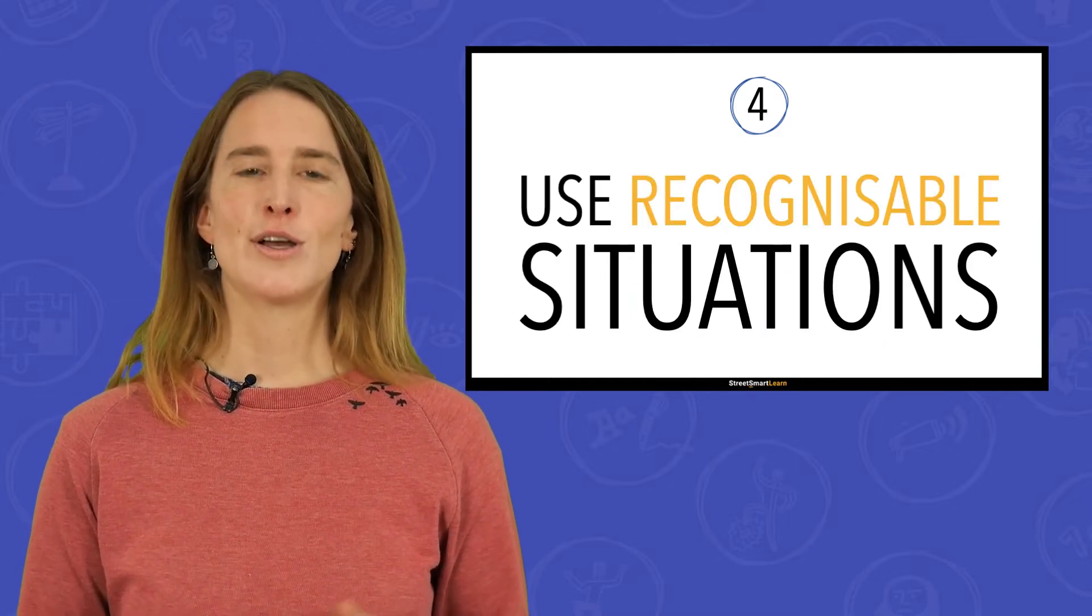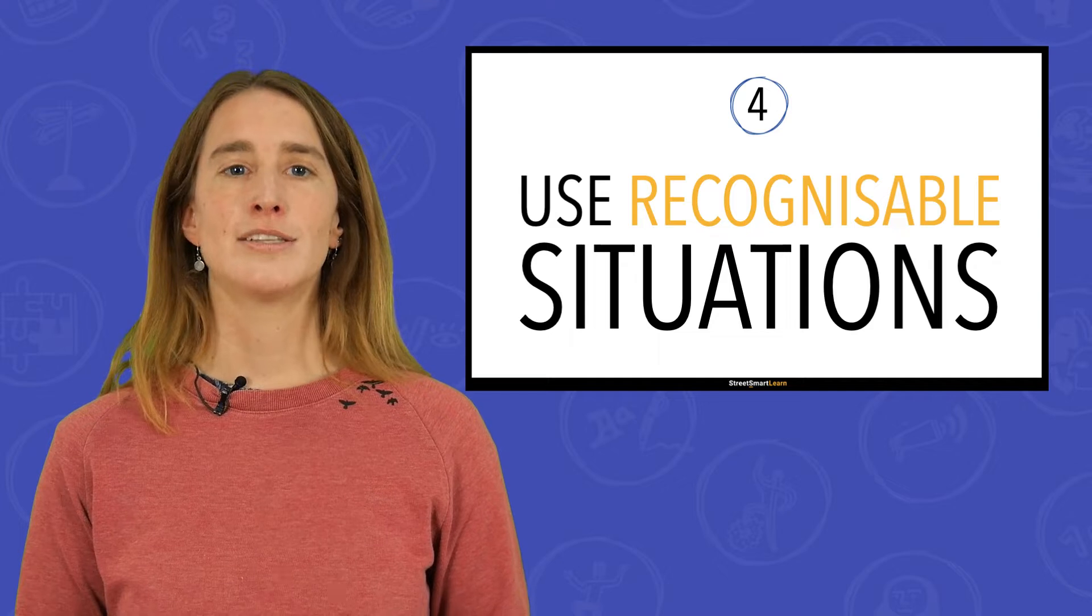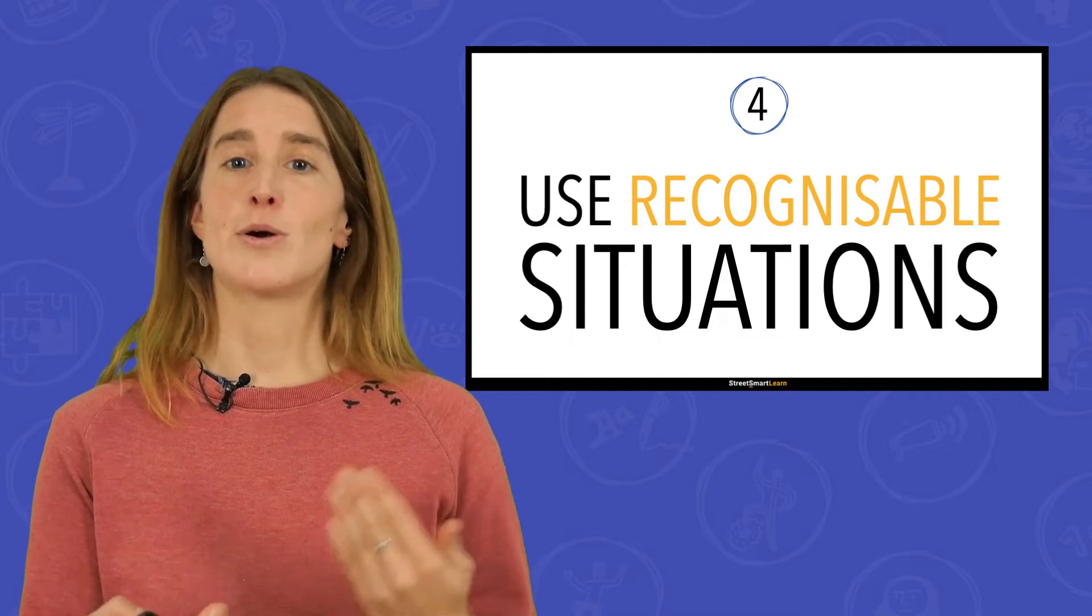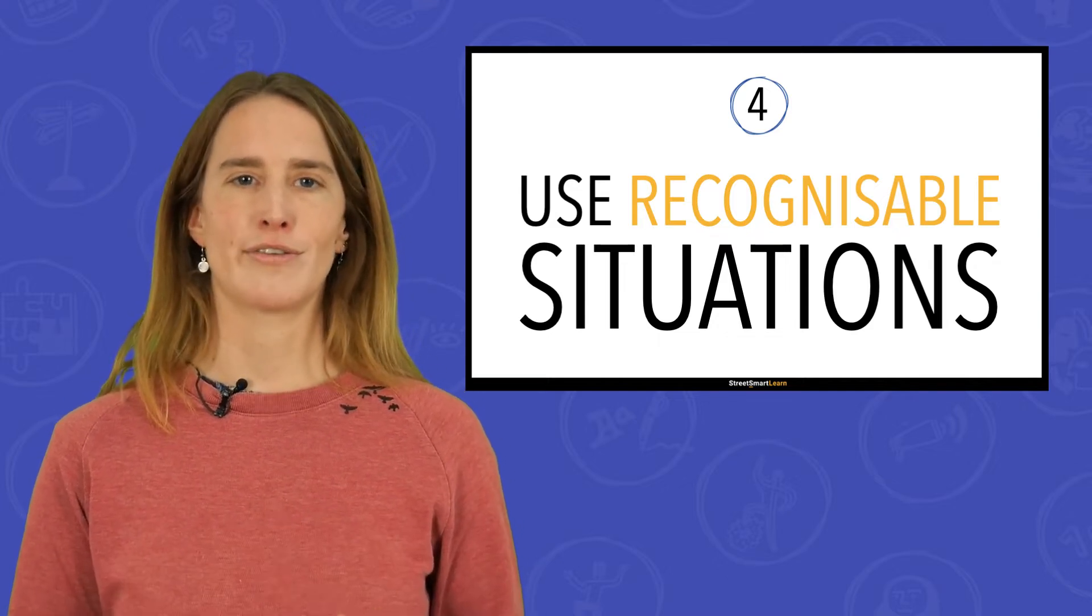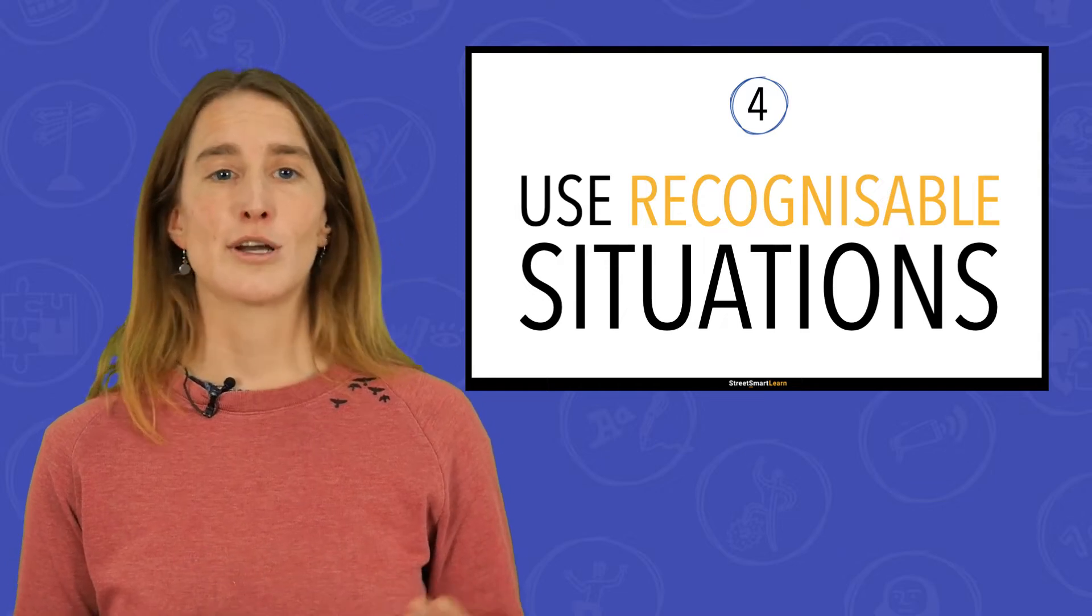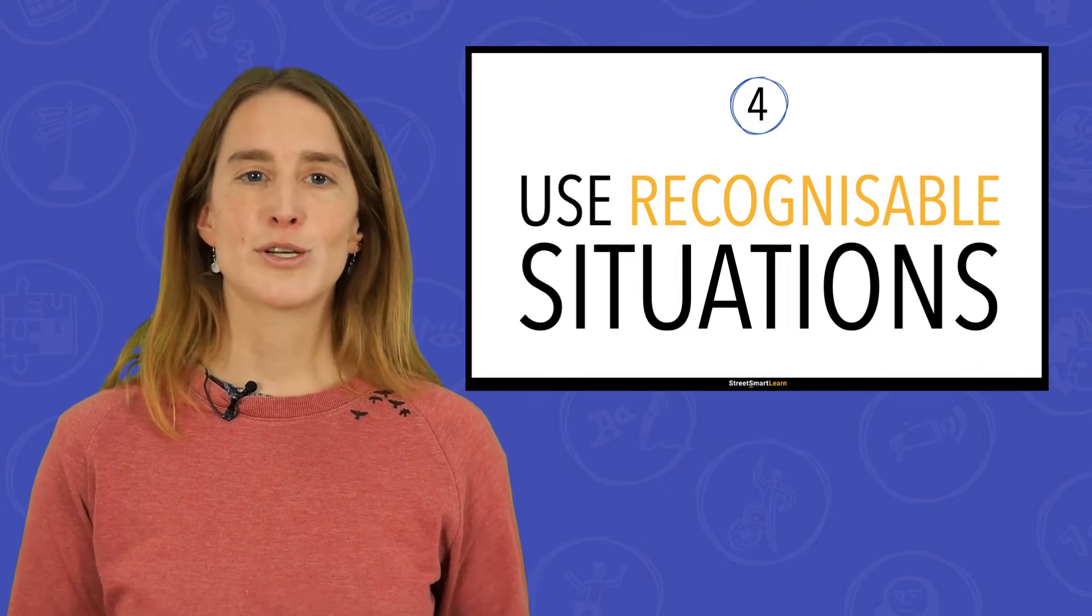Tip 4: Use recognizable situations. Use experiences that children and youth are familiar with and can relate to. This way, you invite them to share their own experiences as well, and you can better respond to the questions they might have. For example, talk about unwanted hugs with toddlers, about sexual banter or teasing with teens, and about intimate pictures with adolescents.